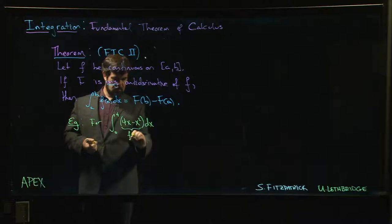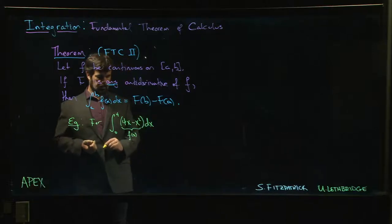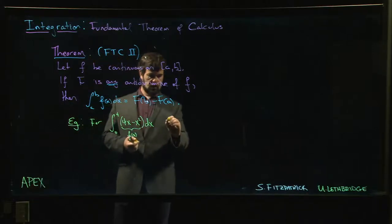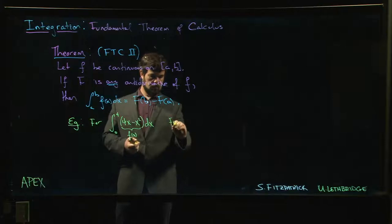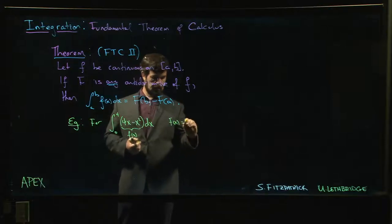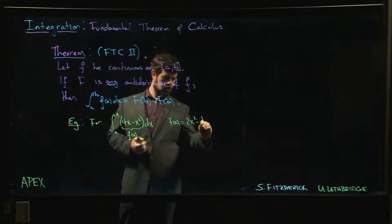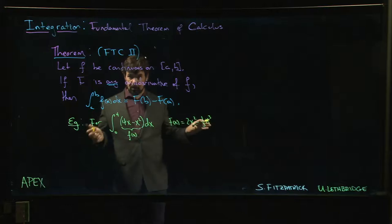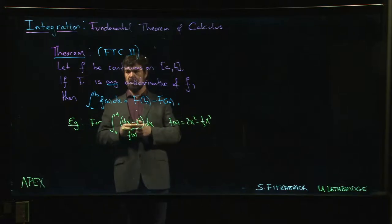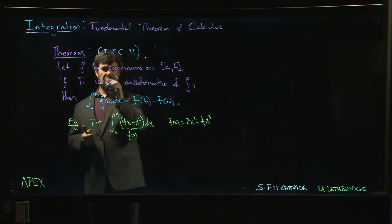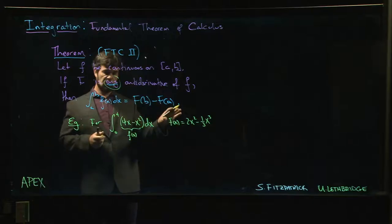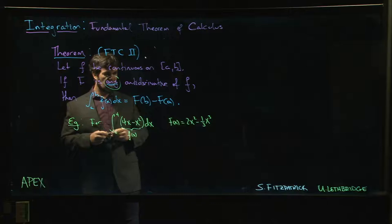We know that an antiderivative here is given by 2x squared minus one-third x cubed, possibly plus a constant, right? But it does say any antiderivative, so let's use this one. We could add a constant if we want, but it's not going to matter.